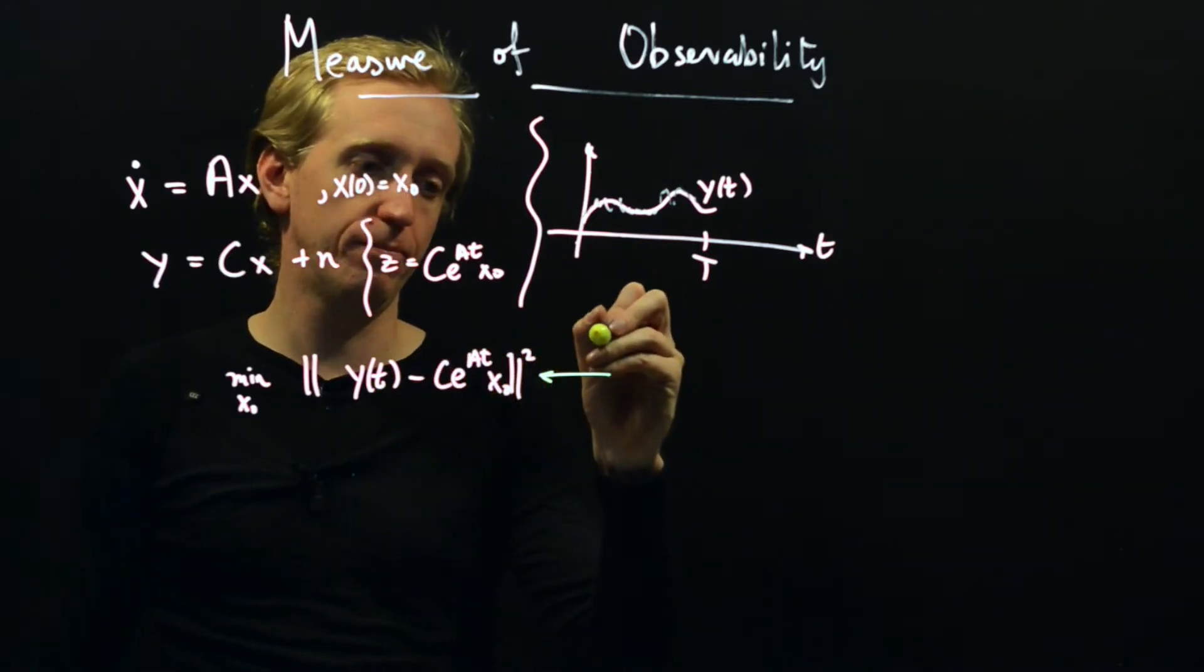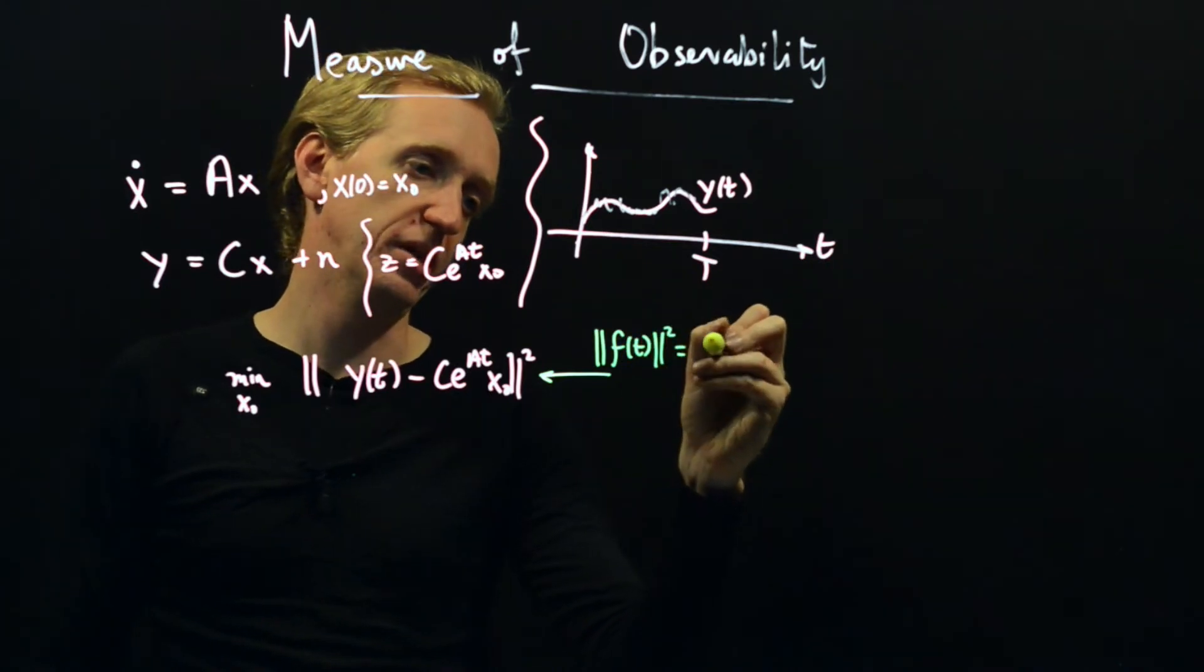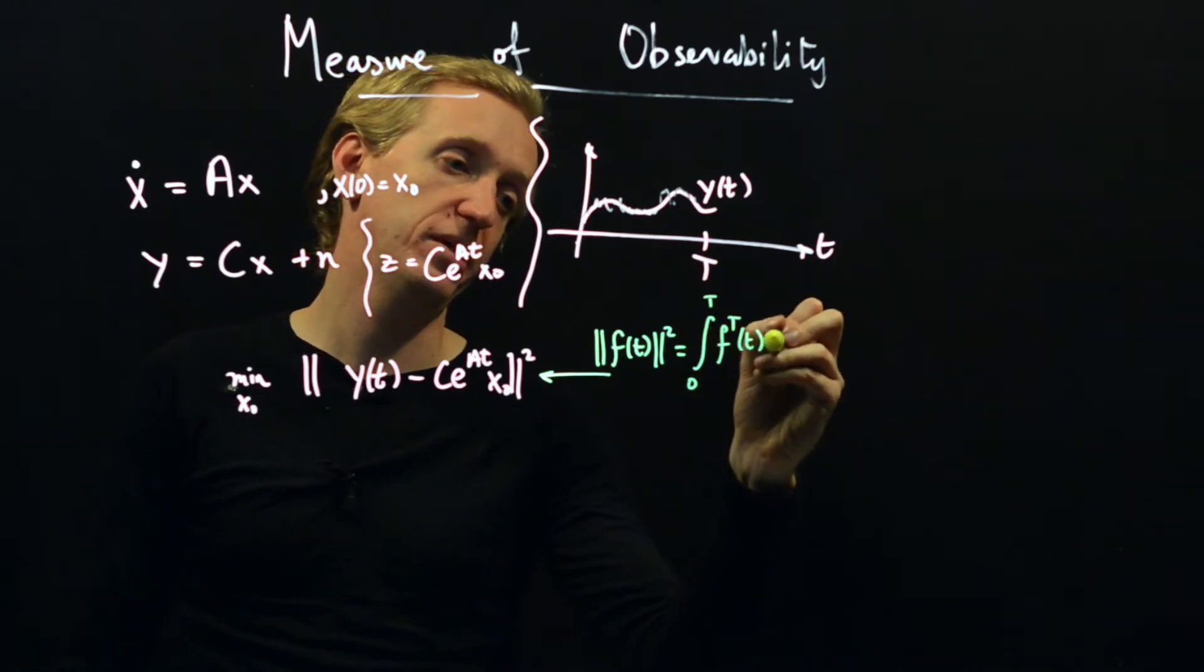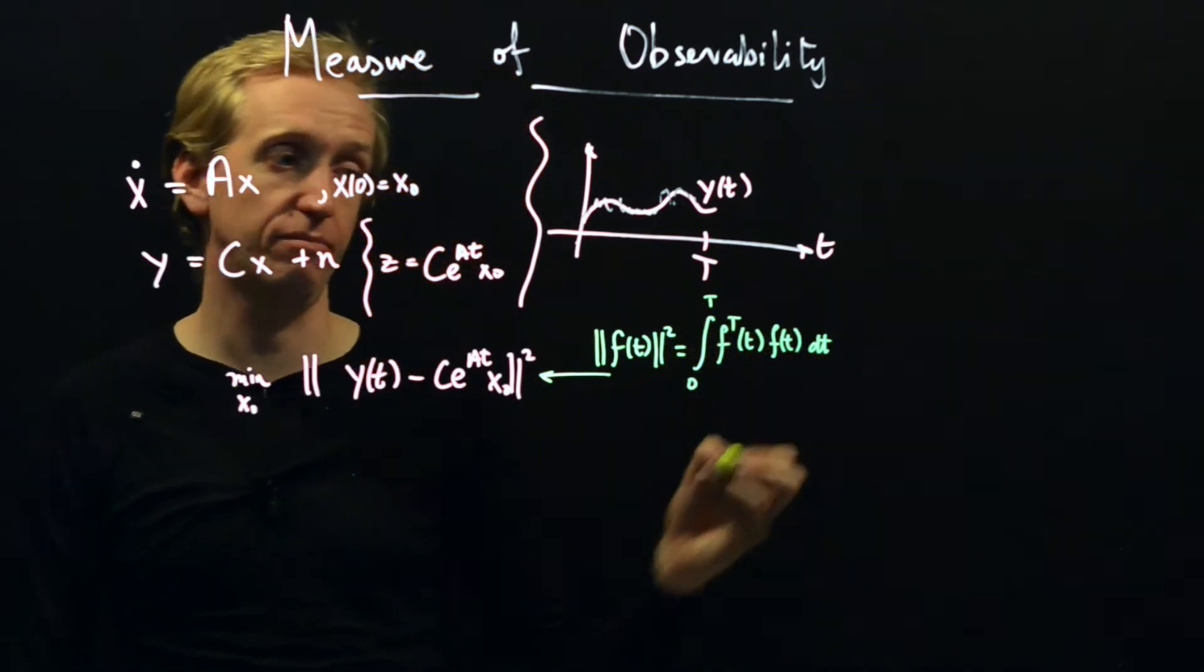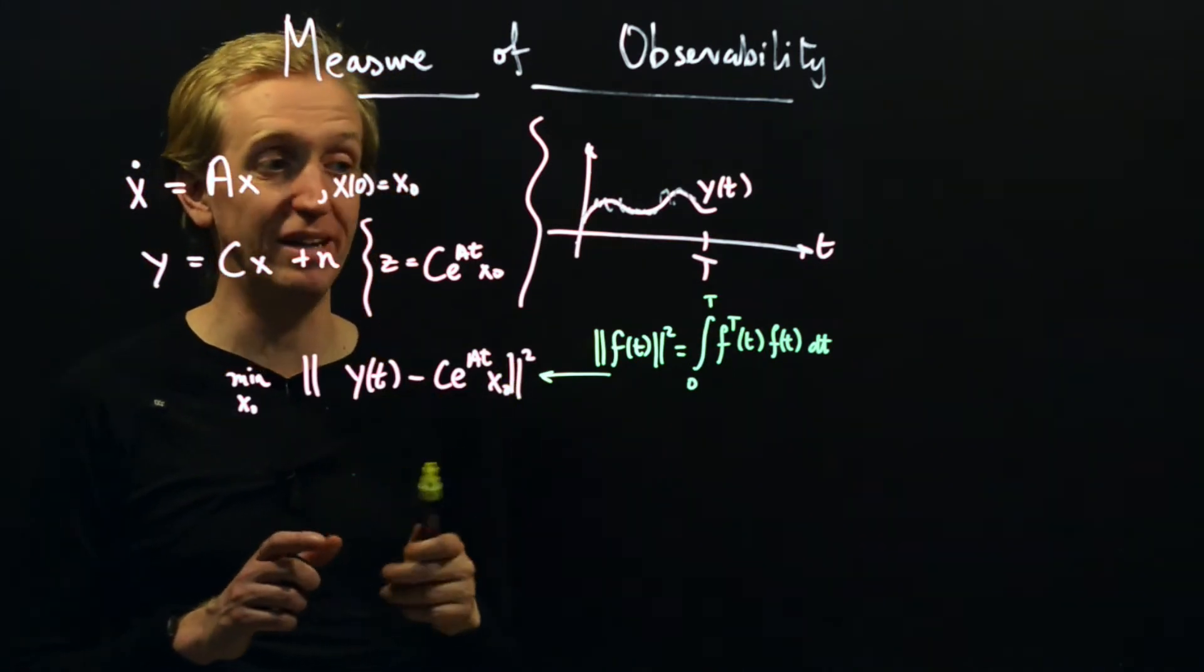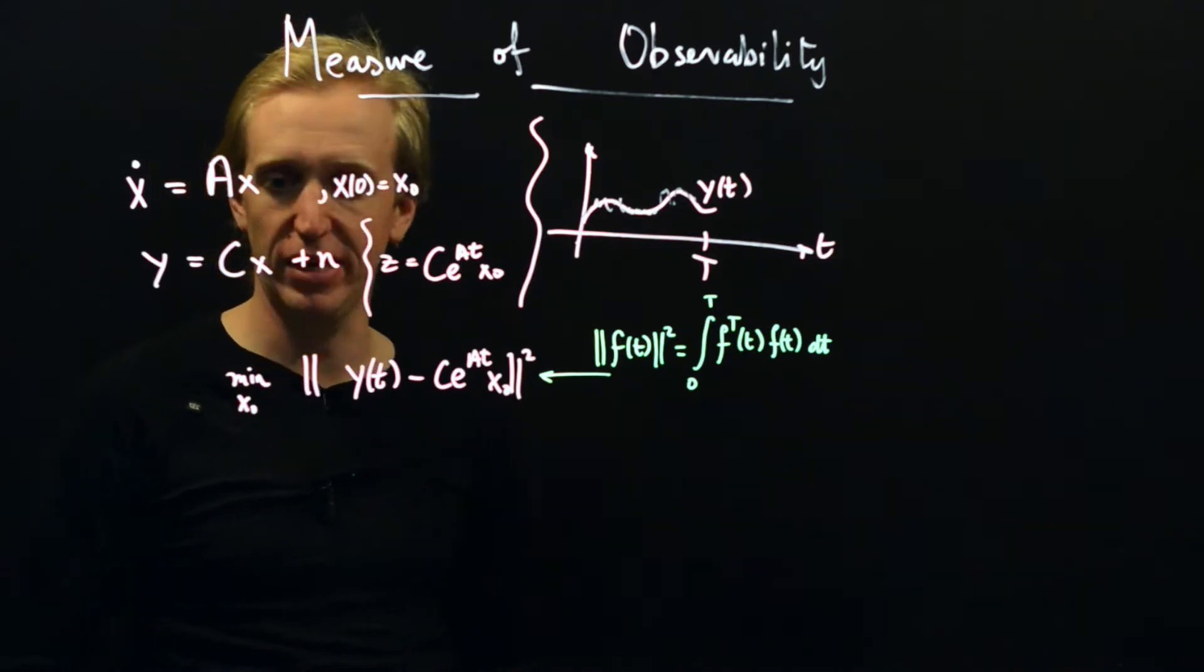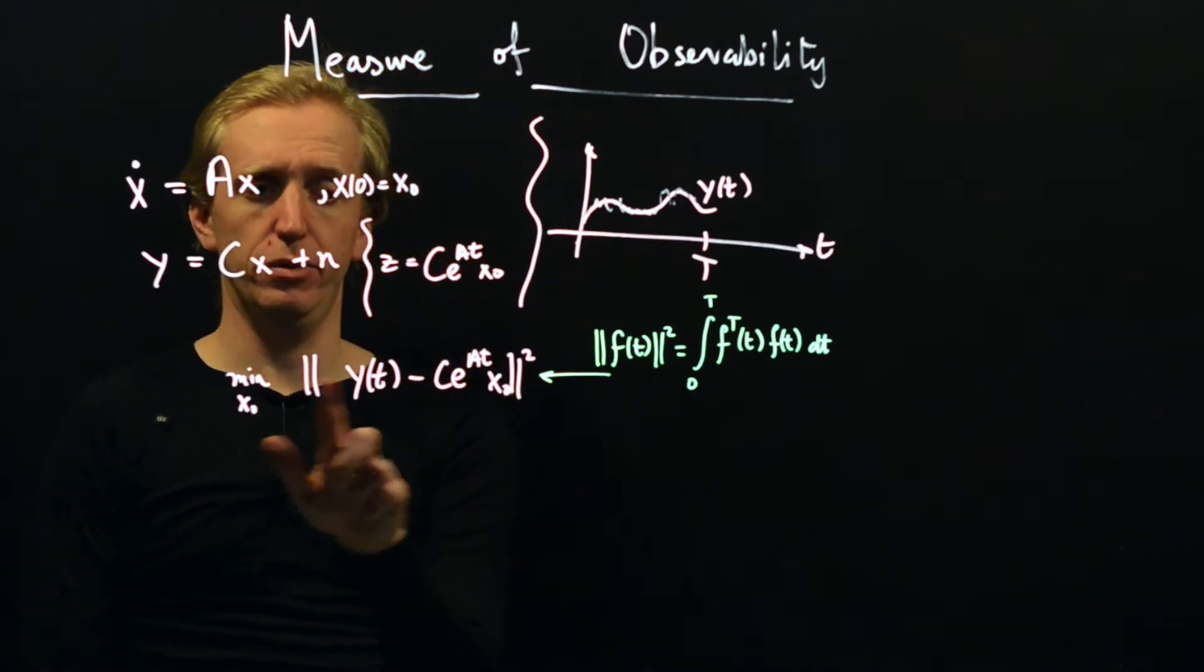So here the norm, if we have some function of time, this is going to be equal to the integral from 0 to t of f transpose of t, f of t, dt. So this is just the natural analog of the norm that we are penalizing in the matrix case. Just we have a function here instead of a vector. So we've got like an infinitely long vector. So this is what we would like to solve.